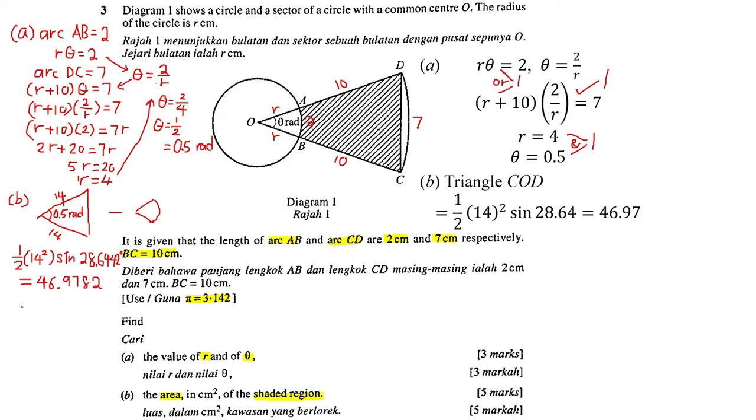Next we want to find the area of the sector. The angle is the same, 0.5 radian, and the radius is 4. So we apply the formula 1 over 2 R squared theta. You will get 4. Now the shadow region is triangle minus sector, and we will get the answer 42.97.